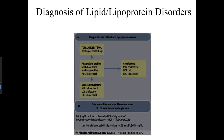Diagnosis of lipid and lipoprotein disorders: measure total cholesterol (fasting or non-fasting), then perform a fasting lipid profile for total cholesterol, total triglycerides, and HDL cholesterol — from which the HDL ratio and LDL cholesterol can be calculated. The Friedwald formula is critical: LDL cholesterol = total cholesterol − HDL − (triglycerides ÷ 5).